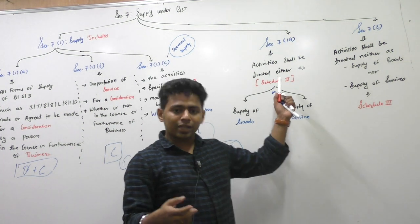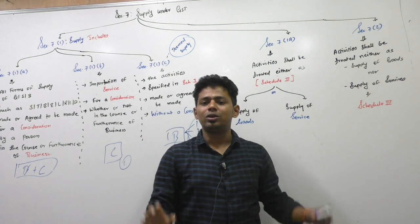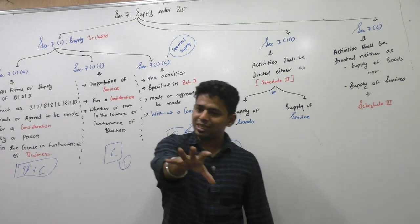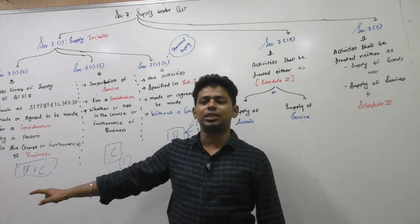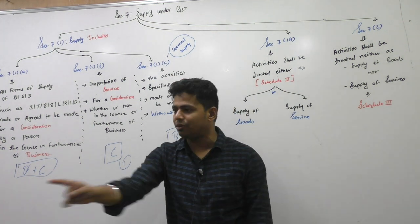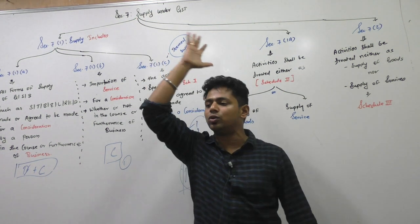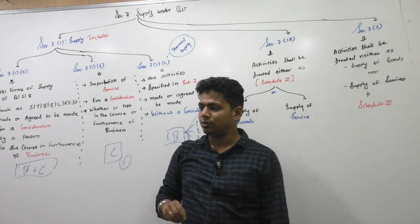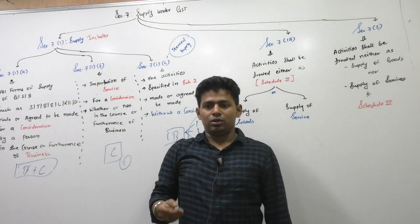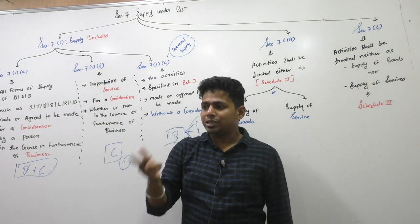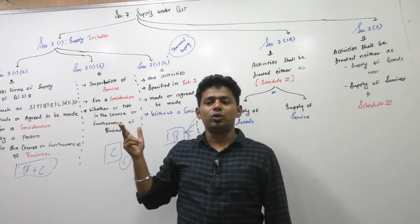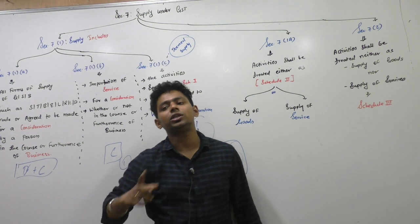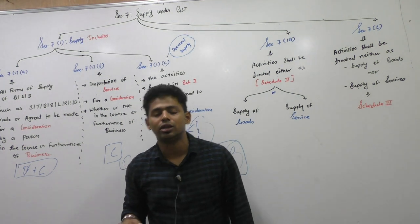What is done by Schedule 2? It has given us a list: this activity is considered as a service, this activity is considered as goods. Hotel — service or goods? You said service. Here also it is written as service.